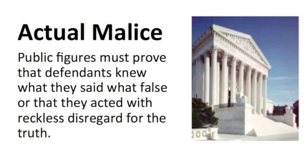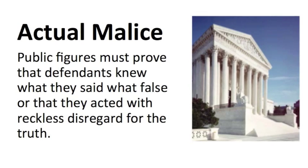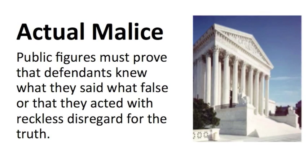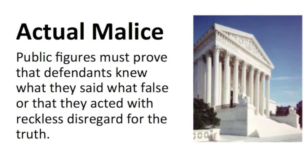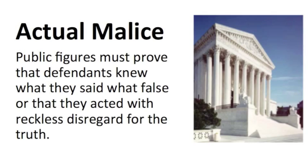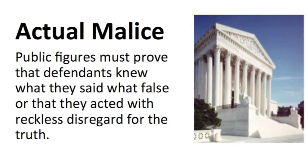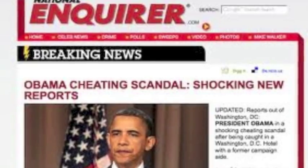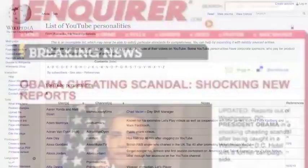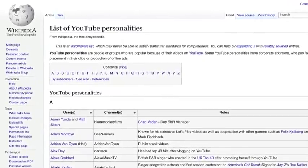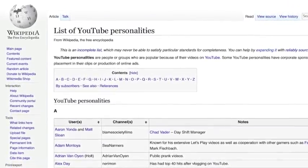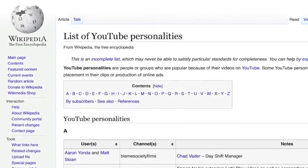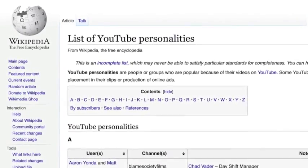When writing online about public officials or public figures, the person who claims defamation may even have to show that you knew what you wrote was false, or that you acted with reckless disregard for the truth. This is what the United States Supreme Court referred to in the 1964 case New York Times v. Sullivan as "actual malice." This is why tabloids and gossip websites are able to avoid many lawsuits. The growth of social media raises new and interesting questions about who's a public figure — for example, if you have 20,000 followers on Twitter, does that make you a public figure? What if you post a YouTube video that goes viral and gets a million views? Are you then a public figure?